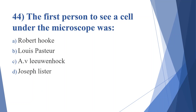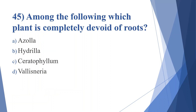Forty-fourth question: the first person to see a cell under the microscope was. Option A: Robert Hooke. Option B: Louis Pasteur. Option C: Antonie van Leeuwenhoek. Option D: Joseph Lister. Answer is option A, Robert Hooke.